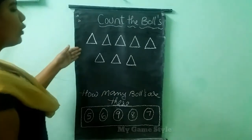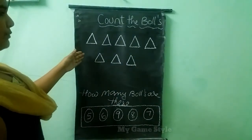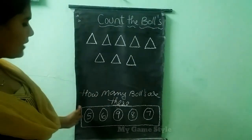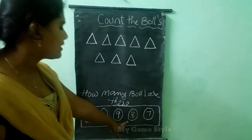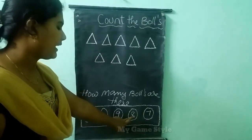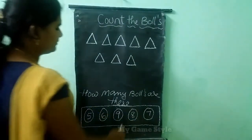Here total 8 objects are there. So where is 8, children? This is 8. This is the correct answer.